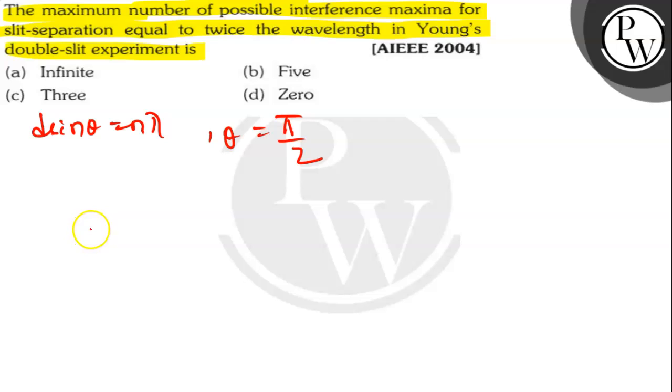So with the given condition, we have n is equal to dsinθ, where θ is π by 2 or 90 degrees. dsin 90 degrees upon λ is equal to d by λ. So it will be 2.